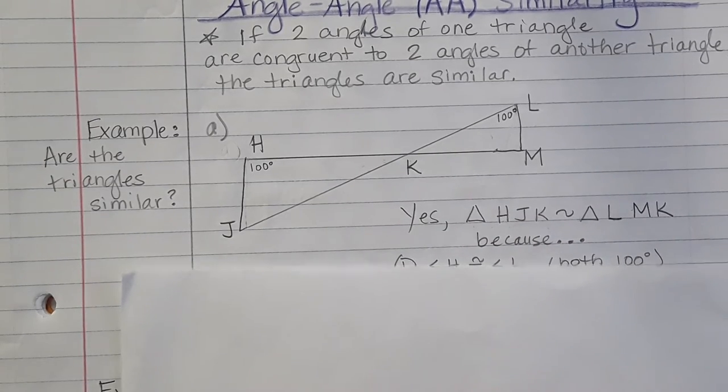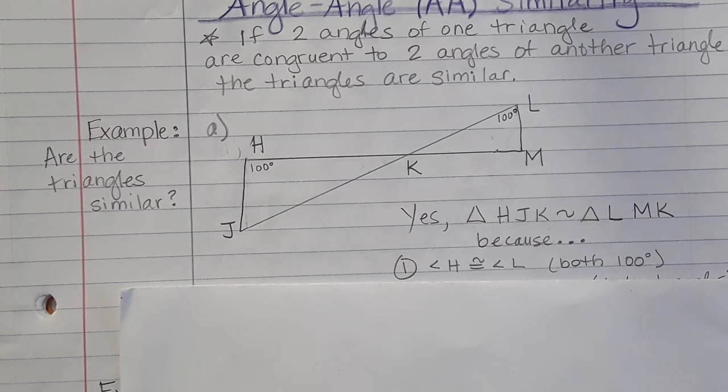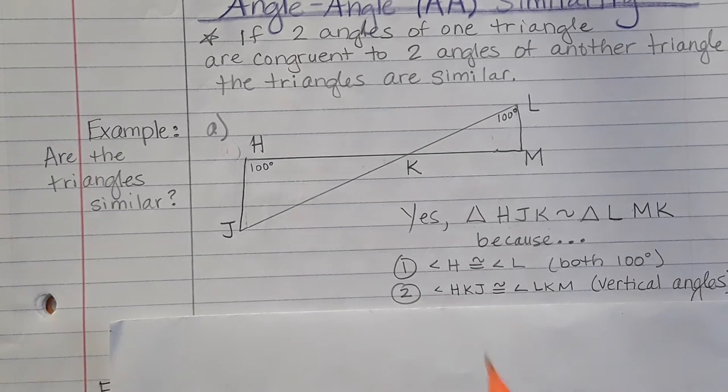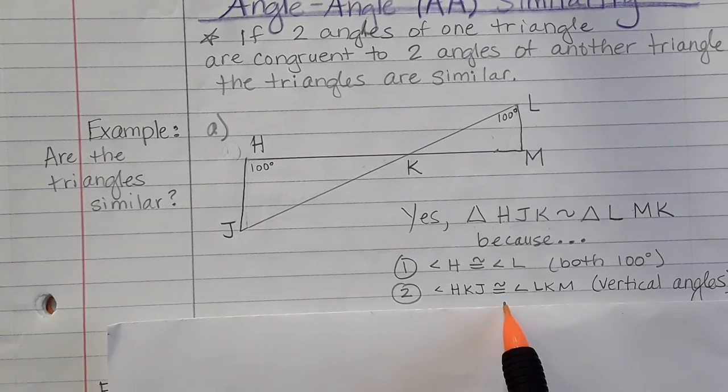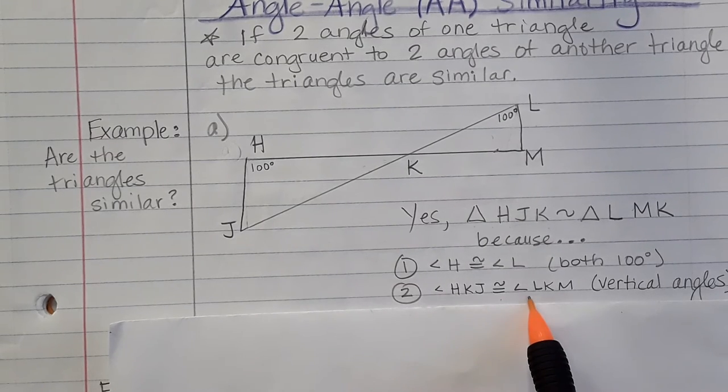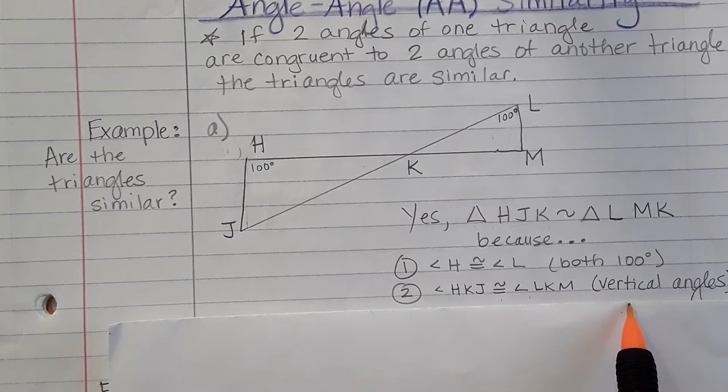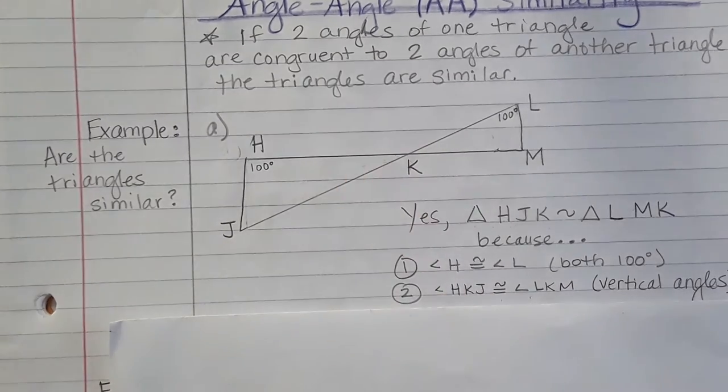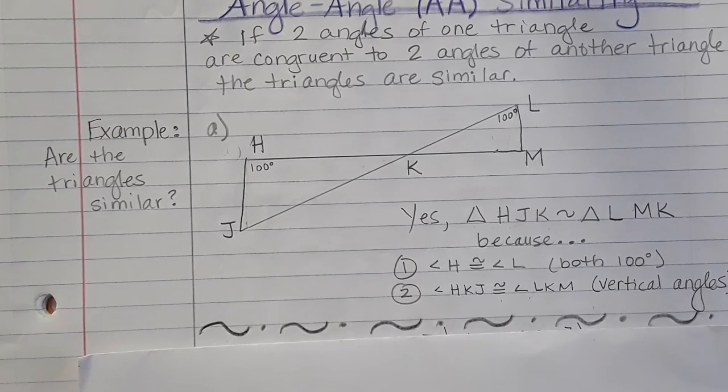So they are similar because angle H and angle L are both 100 degrees. And we said angle HKJ is also congruent to angle LKM. Remember, vertical angles. And remember, you cannot just say angle K because we don't know where it is. So let's move on.